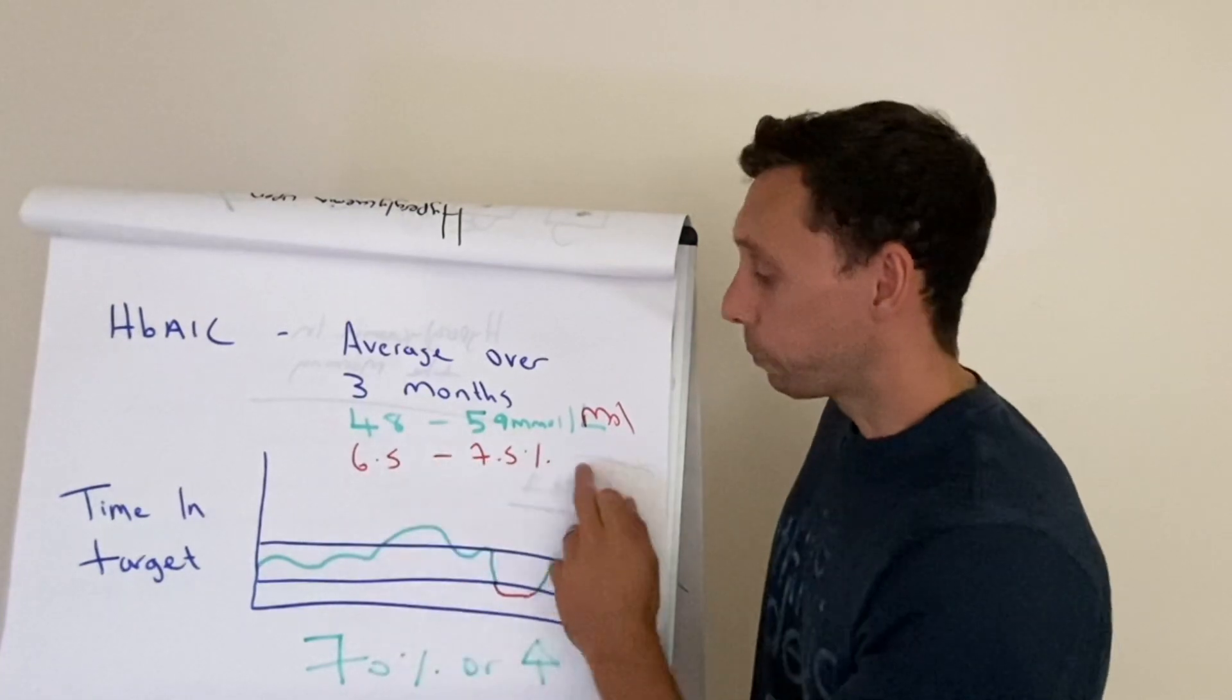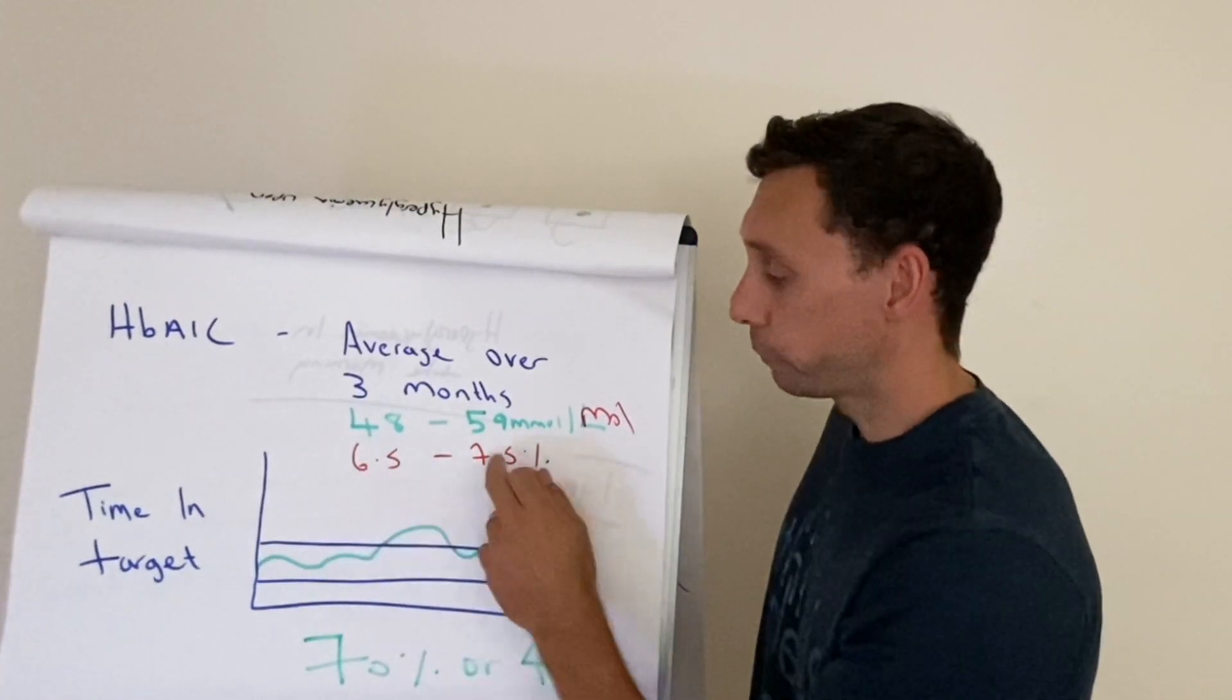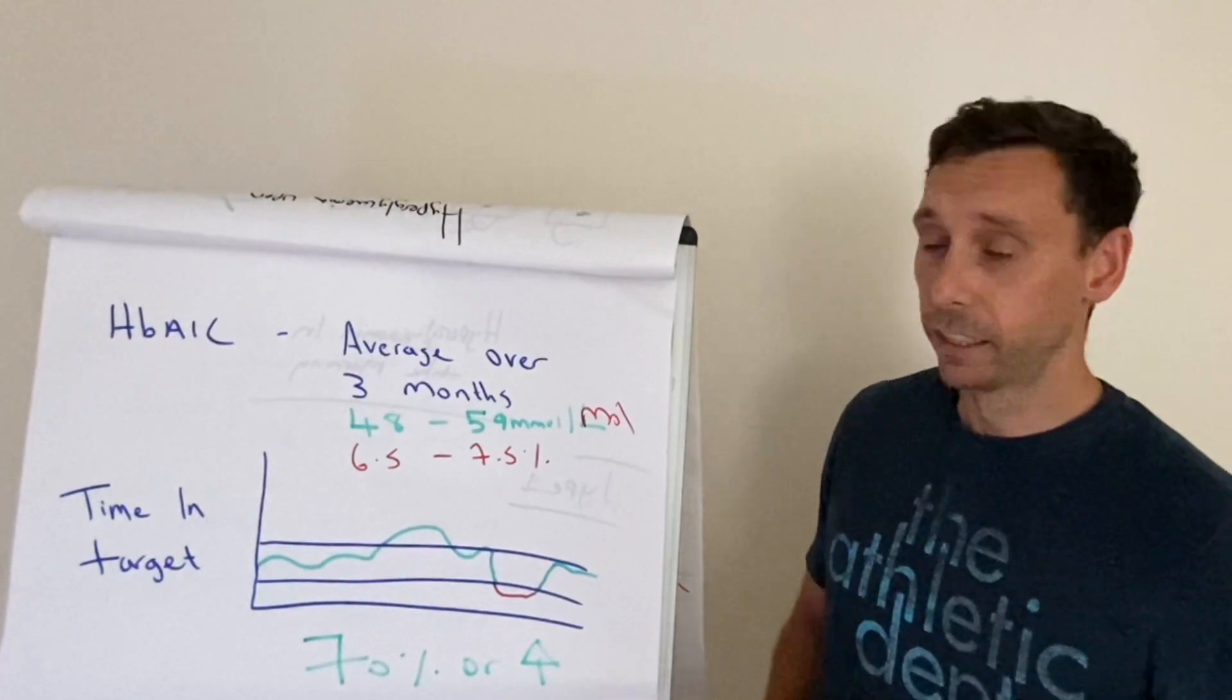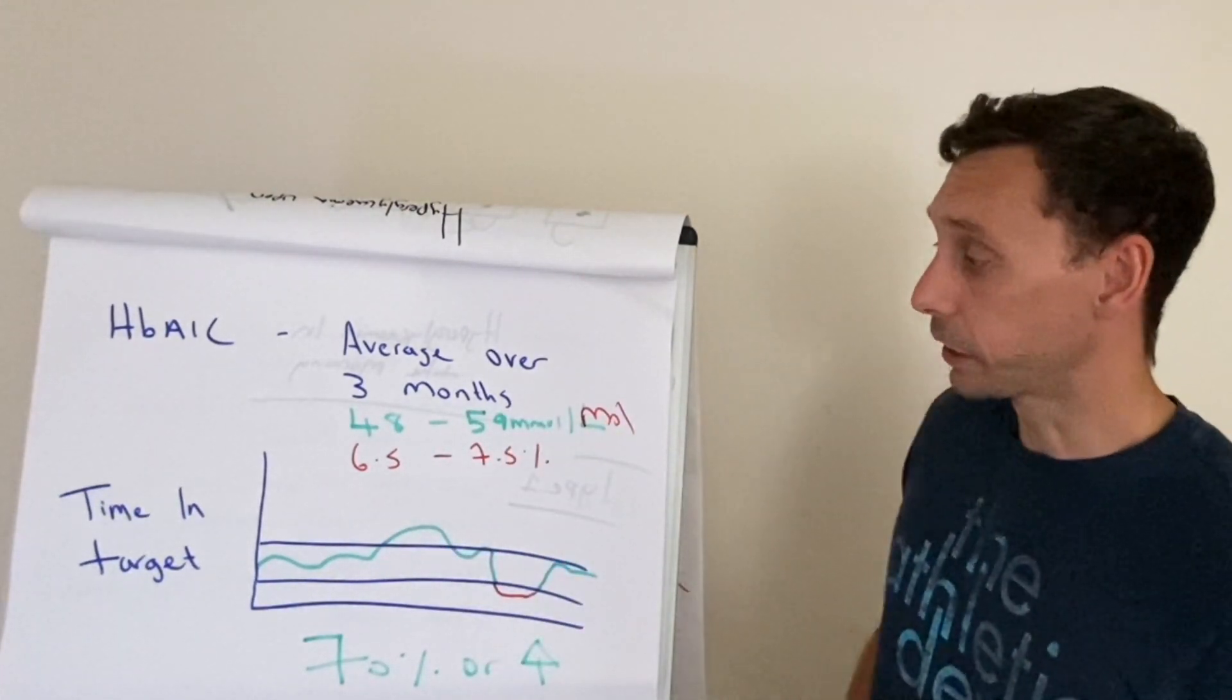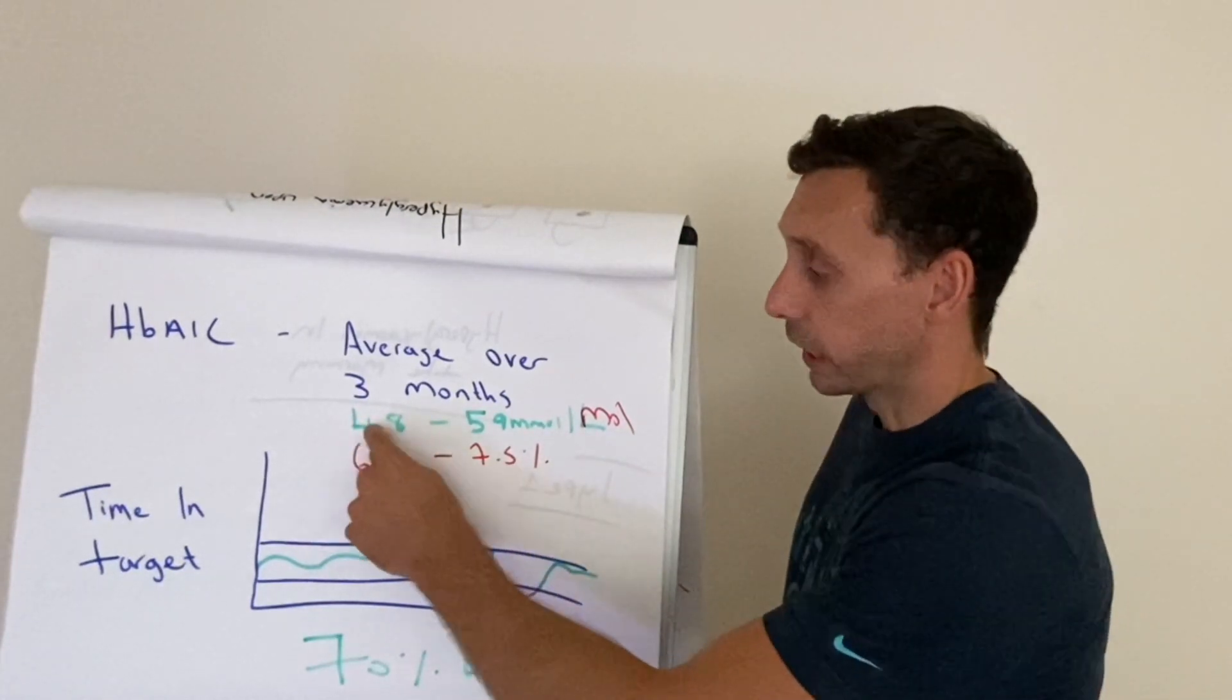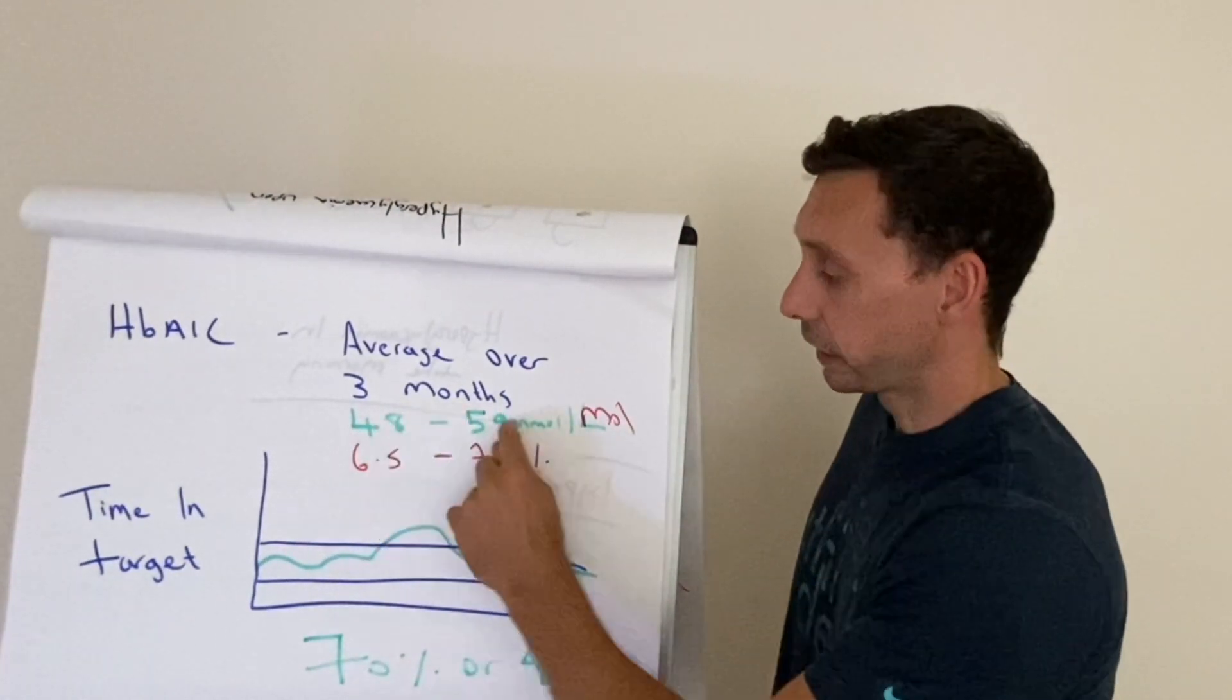If you're in the old money, which is the percentage measurement, it will be between 6.5 and 7.5%. So these are one and the same, they're just demonstrated slightly differently. This is the one we use in the UK, the millimoles per mole, 48 to 59.